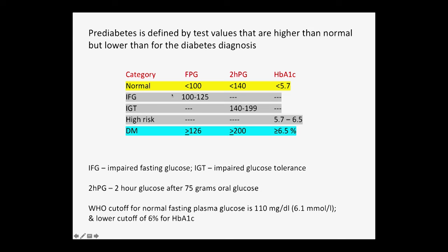So let me take you through this slide. There are several ways of diagnosing diabetes. You can measure a fasting plasma glucose in the morning, you can do an oral glucose tolerance test where you consume 75 grams of glucose and then check your glucose two hours later, or you can measure your HbA1c. I'll come back to HbA1c in a moment.